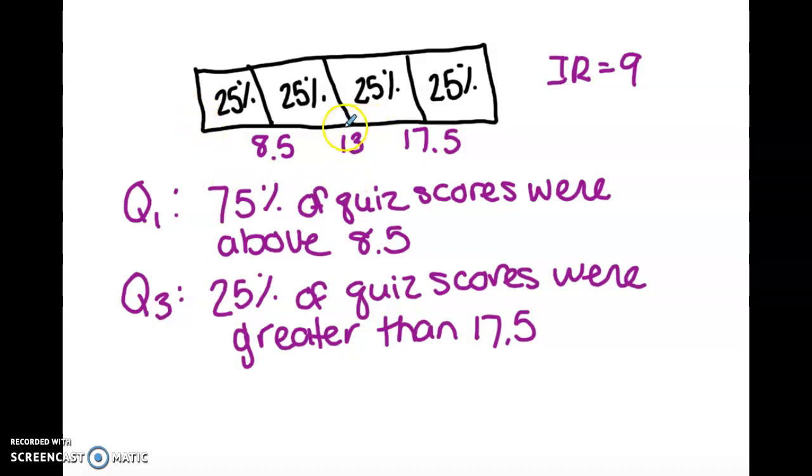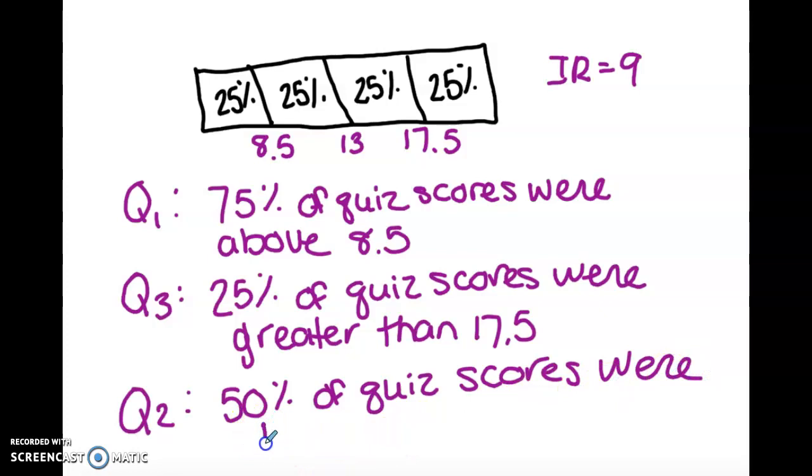I could also interpret Q2. So why don't we just do that. Q2, I could say 50% of quiz scores were below 13 points. I could also say 50% of quiz scores were above 13 points.